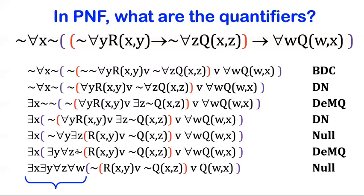So here's one correct answer, exists X exists Y for all Z, for all W. Now let me tell you, this is not the only correct answer. So if this is not what you got, let me say this.